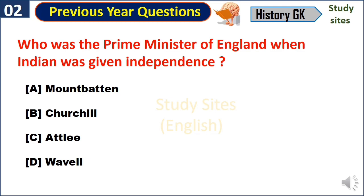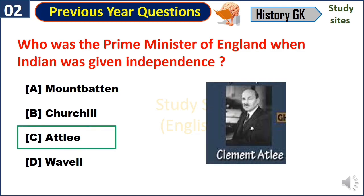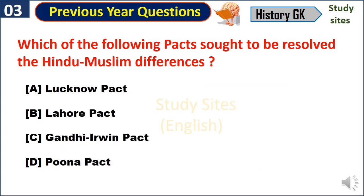Who was the Prime Minister of England when India was given independence? Clement Attlee. Which of the following pacts sought to resolve the Hindu-Muslim differences?